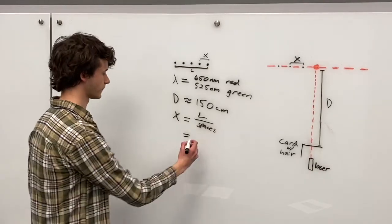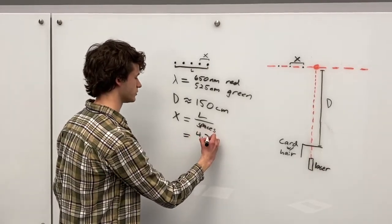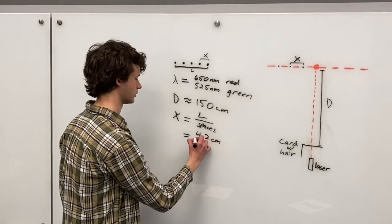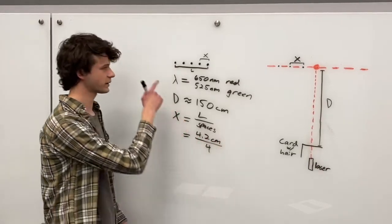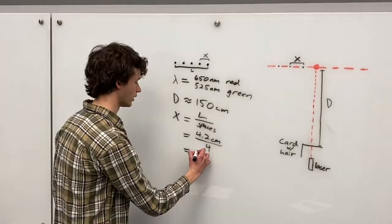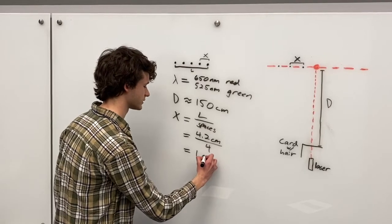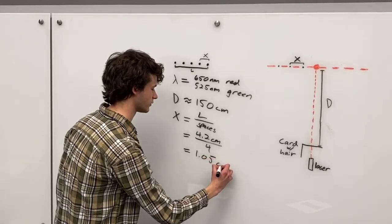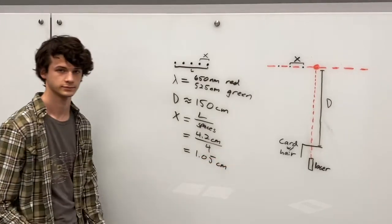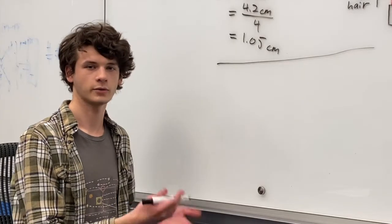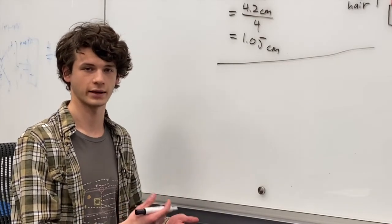When I did this experiment, L was 4.2 centimeters. We're going to divide by four spaces because I had five dots. And so the distance between two spaces is about 1.05 centimeters. Now we can put all this together to find the diameter of your hair.